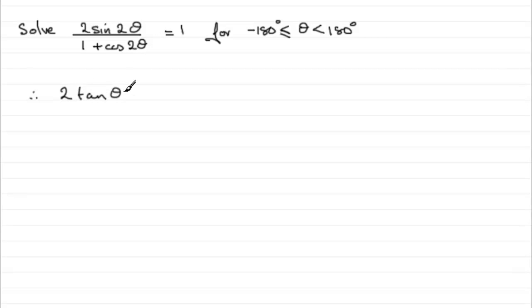So it's got to be 2 tan theta equals 1. Next all we need to do is divide both sides by 2, so we therefore have tan theta equals a half. When it comes now to working out what theta is, we obviously take the inverse tan to both sides, so we get theta equals the inverse tan of one half.